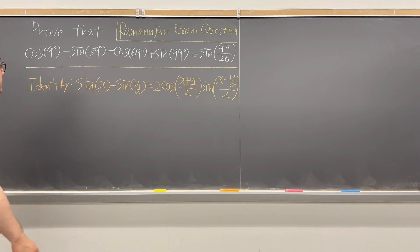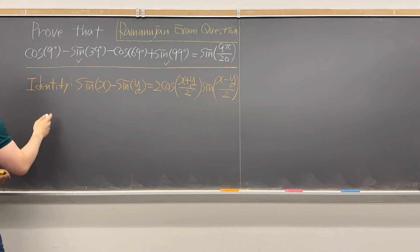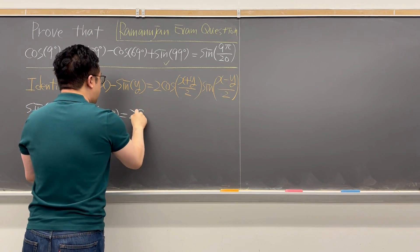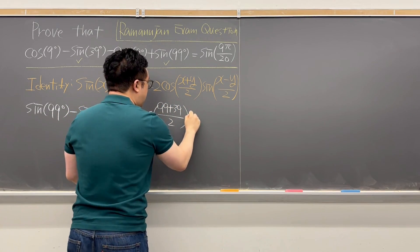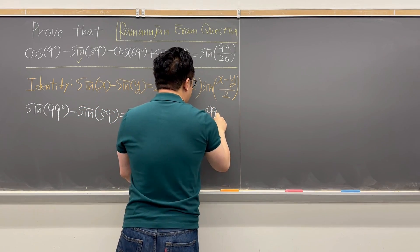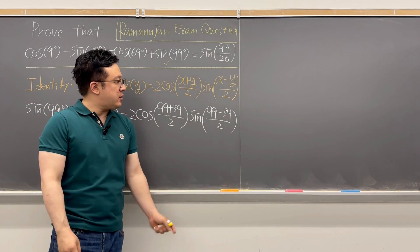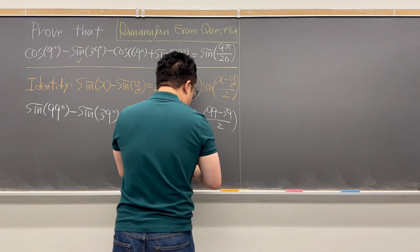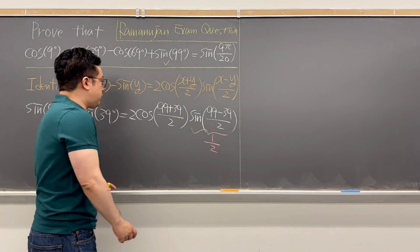On the left-hand side, we choose sine 99° minus sine 39°. Using this identity, we rewrite those two terms as 2 times cosine((99+39)/2) times sine((99−39)/2). Now 99 minus 39 equals 60, so 60 over 2 is 30, and sine 30° equals exactly 1/2. Adding 99 and 39 and dividing by 2 gives 69.